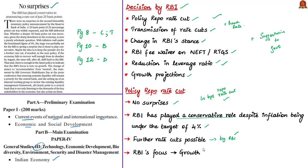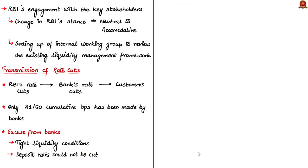The latest policy indicates RBI's focus is now on growth. The author appreciates that RBI is not only listening to the demands of key stakeholders but also acting on them, evident from two facts: first, the change of RBI's stance to accommodative from neutral, where the RBI Governor Mr. Shaktikanta Das ensured liquidity in the system remains a priority; and second, the setting up of an internal working group to review the existing liquidity management framework.